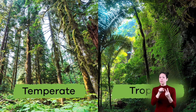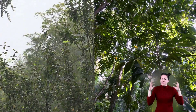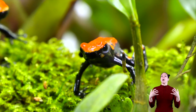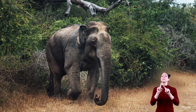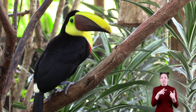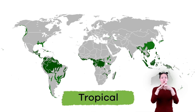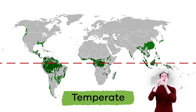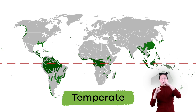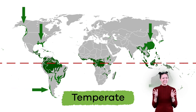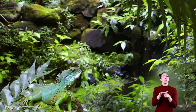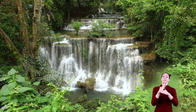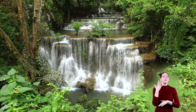There are two different kinds of rainforests: temperate and tropical. Both are wet and rainy and have thick vegetation and lots of animal life, but they are different from each other. Tropical rainforests are found closer to the equator, and temperate rainforests are found near the cooler coastal areas, farther north or south of the equator. Because of their location near the equator, tropical rainforests are warmer and average more rainfall than temperate rainforests.